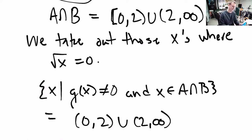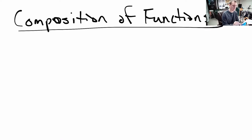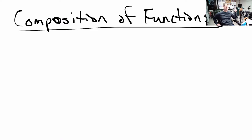That brings me to the hard topic for the day: composition of functions. In everyday terms, it's like a chain of things happening — one thing leads to another, leads to another. It's like a stack of dominoes falling over: you push the first, which pushes the second, which pushes the third, and so on. It's this process where an input turns into an output, then that output becomes the input for the next, and so forth.